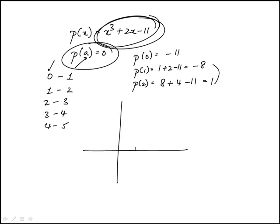If you were to plot this, at 0 it's minus 11 somewhere here, and then minus 8, and then it goes to 1, so it goes something like that.